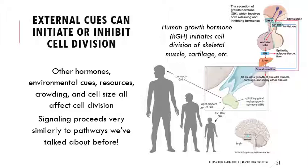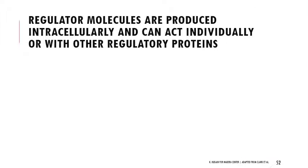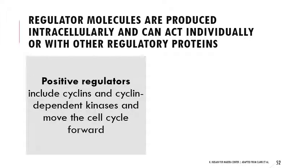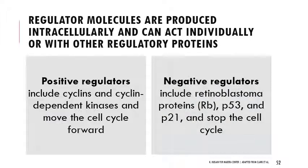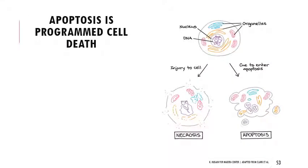There are also regulator molecules produced inside the cell. We divide them into two classes: those that move the cell cycle forward and those that stop it. Positive regulators, like cyclins and cyclin-dependent kinases, keep the cell cycle moving forward toward division. Negative regulators, like retinoblastoma proteins, p53, and p21, act to stop the cycle — temporarily or completely.